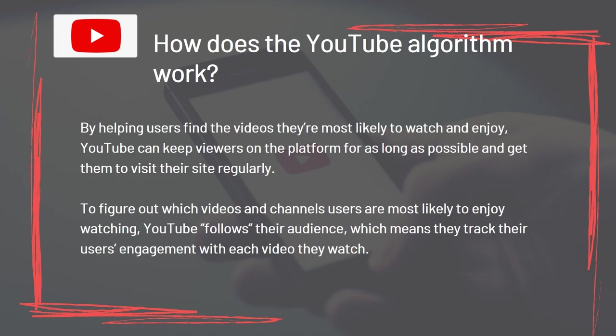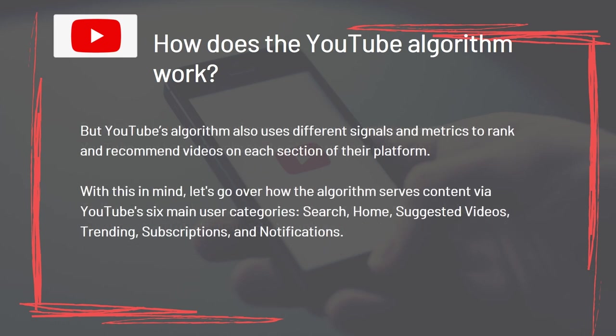By helping users find the videos they are most likely to watch and enjoy, YouTube can keep viewers on the platform as long as possible. To figure out which videos and channels users are most likely to enjoy, YouTube tracks their engagement with each video they watch. YouTube's algorithm also uses different signals and metrics to rank and recommend videos across six main sections: Search, Home, Suggested Videos, Trending, Subscriptions, and Notifications.